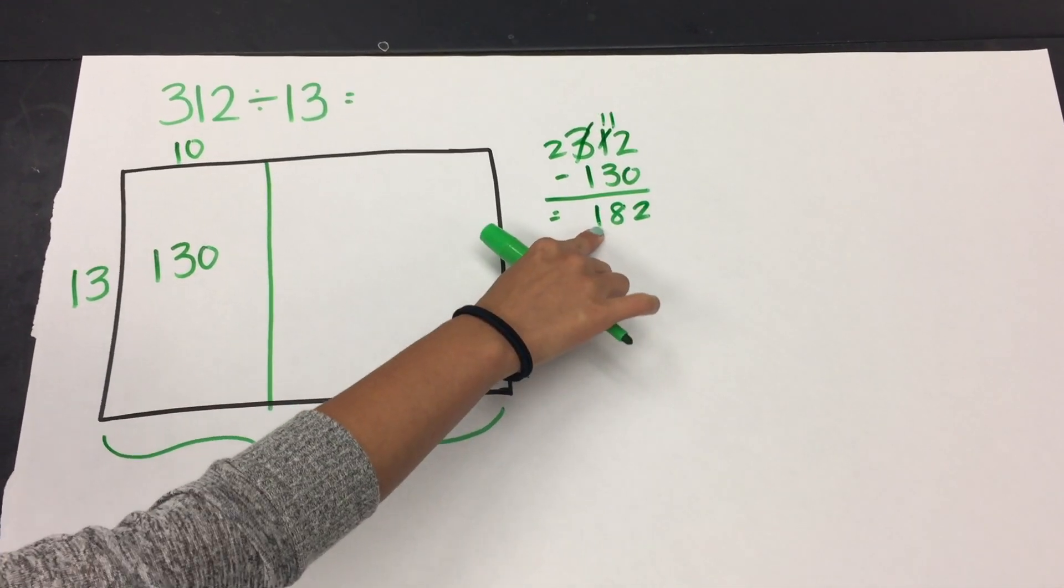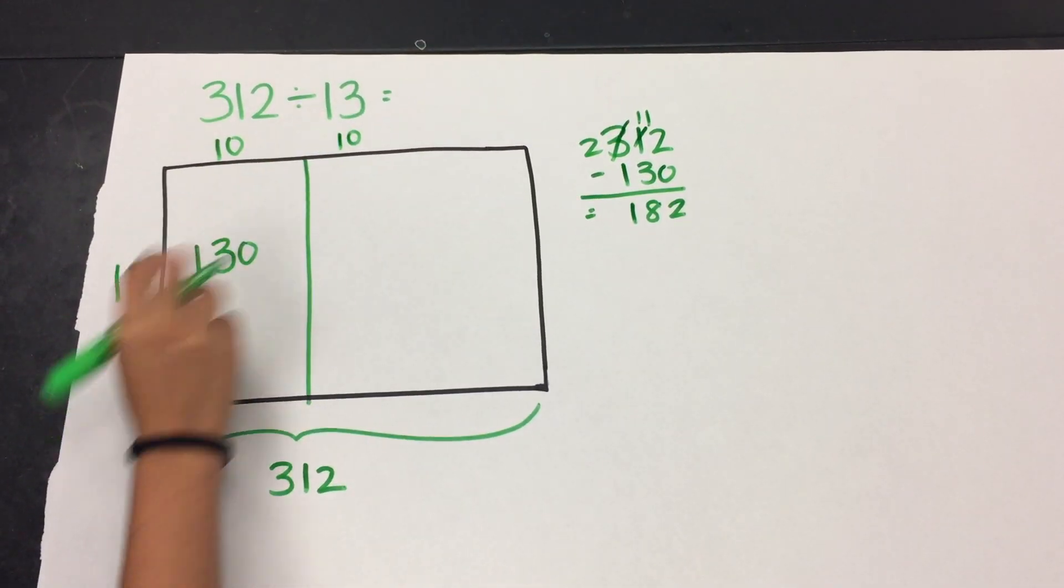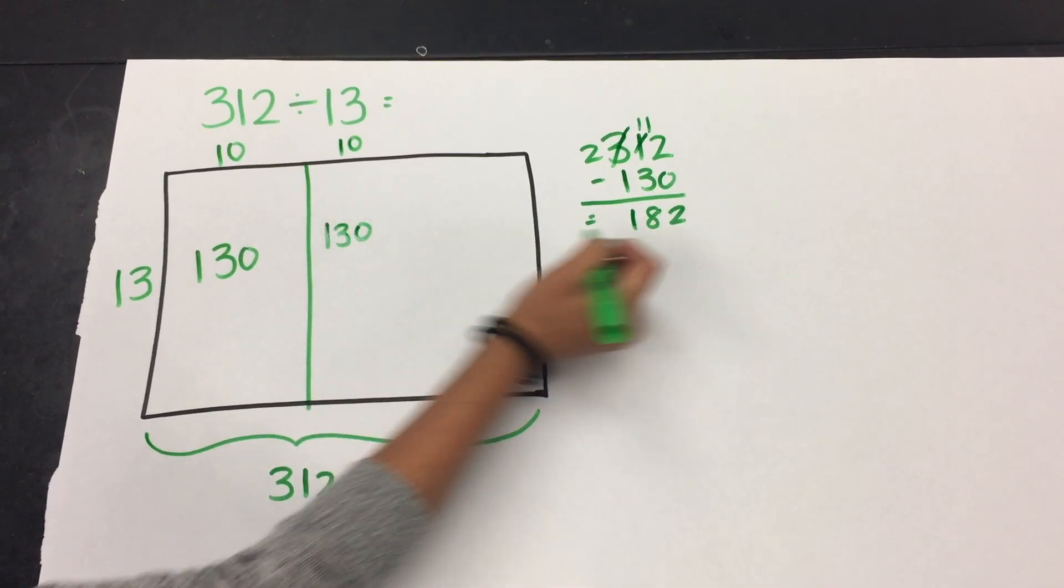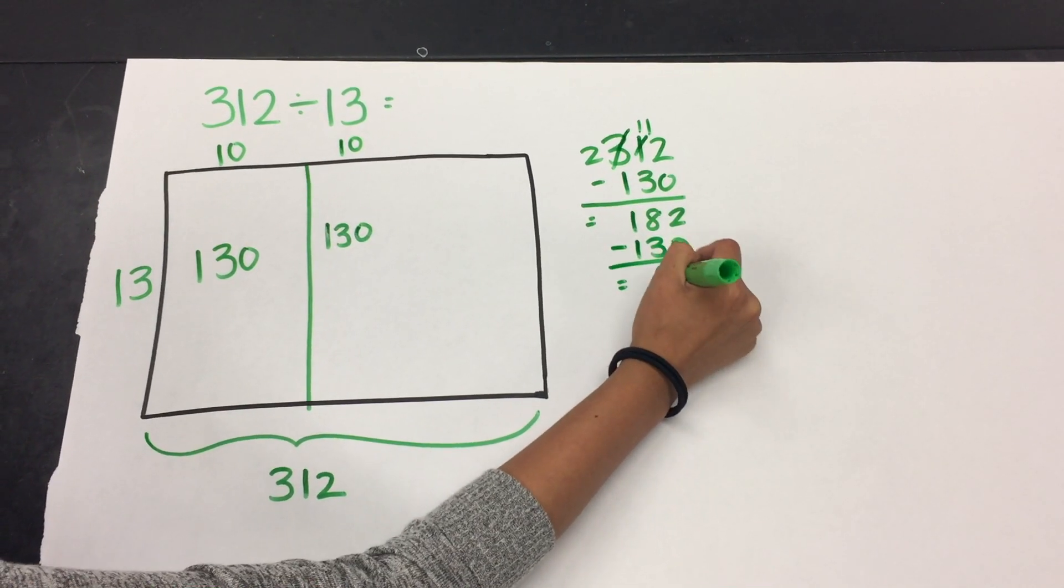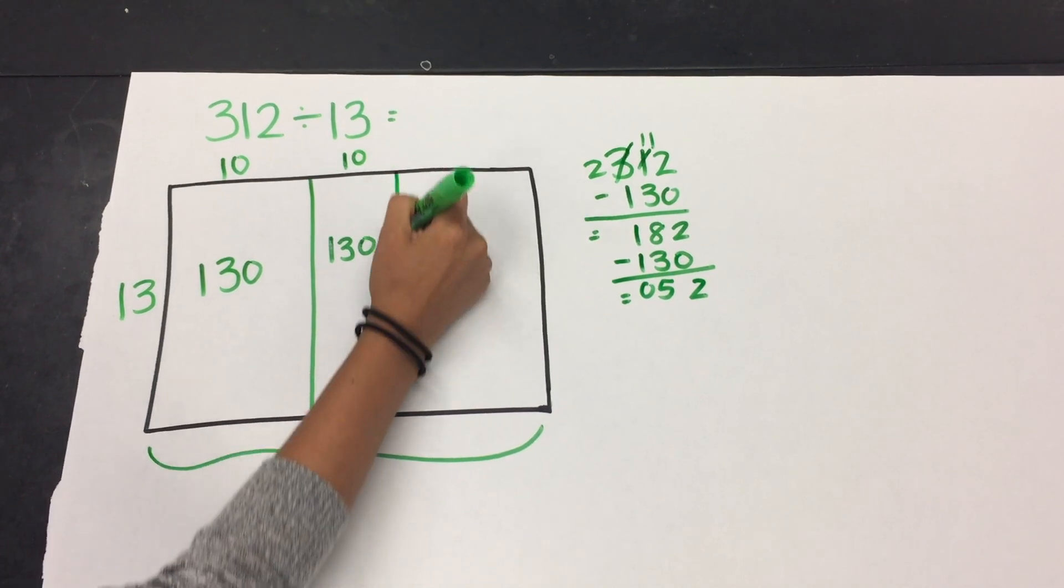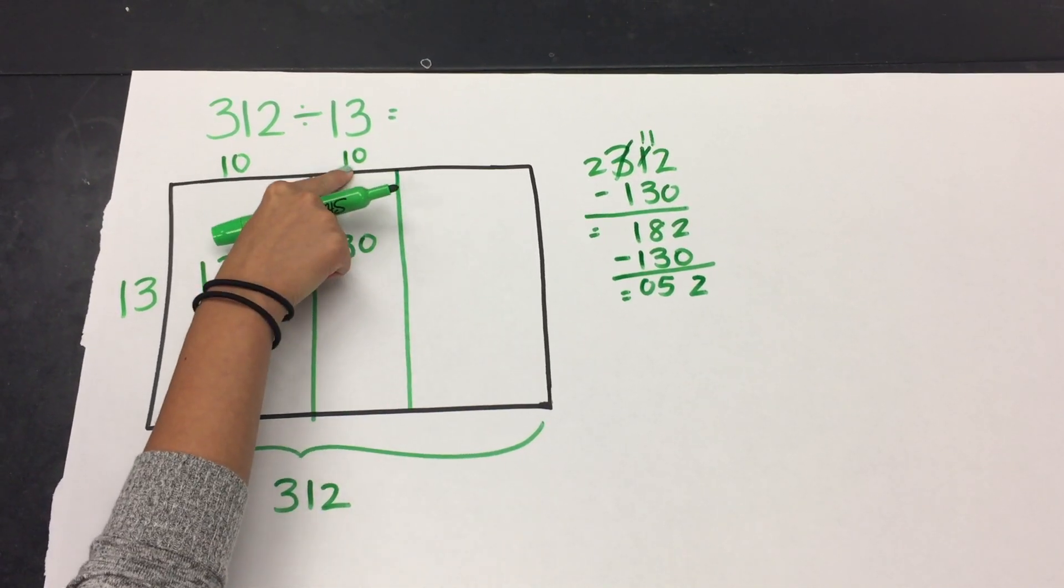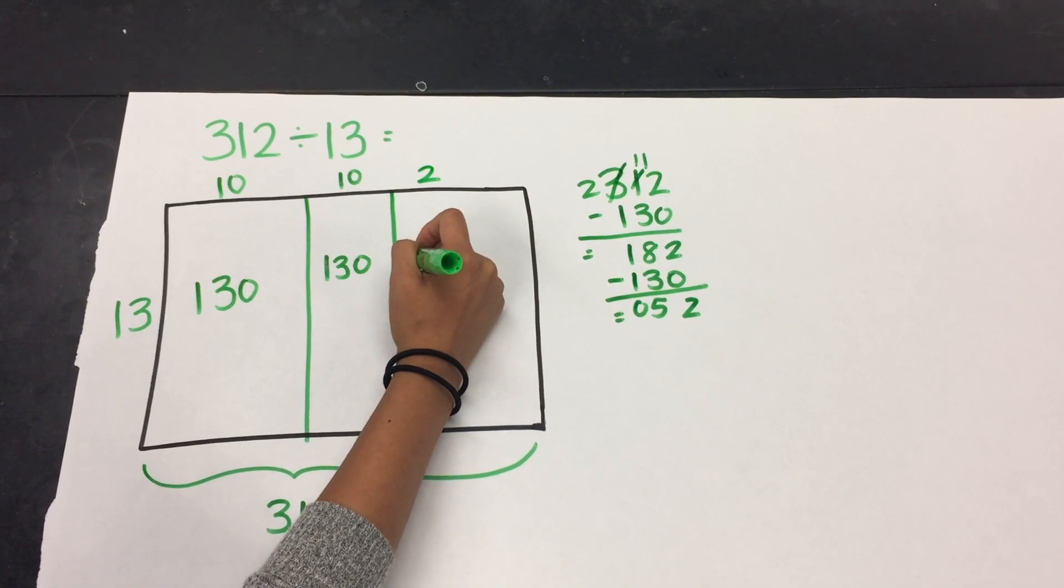So I can see that I could do another 10 groups of 13 because that would equal 130. And I'm starting to get closer and closer to 0. So I can't take another 10 groups of 13, but I'm going to take 2 groups of 13, which would equal 26.